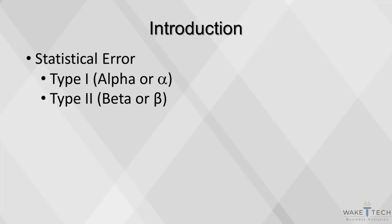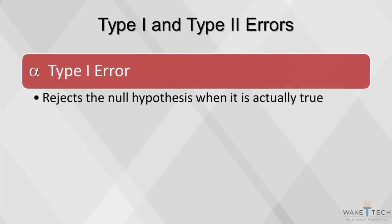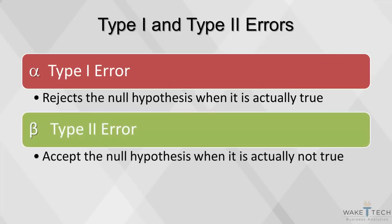This video will cover two types of statistical error: type 1 or alpha, and type 2 or beta. All statistics derived from samples are subject to error. A type 1 error rejects the null hypothesis when it is actually true. A type 2 error accepts the null hypothesis when it is not true.